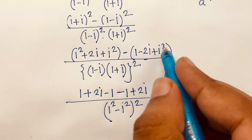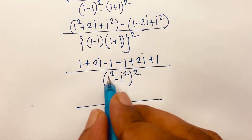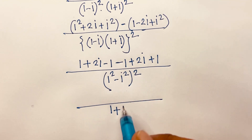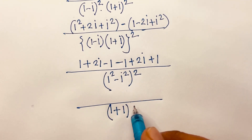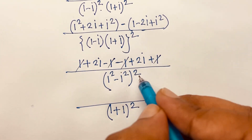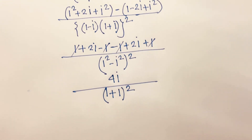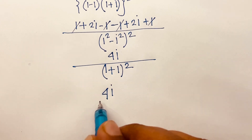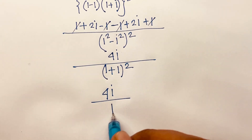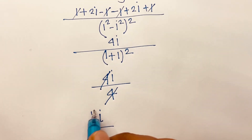Since i² = -1, the denominator becomes (1 - (-1))² = (2)² = 4. The numerator simplifies: the 1s cancel, leaving 2i minus (-2i) = 4i. So the result is 4i over 4, and the 4s cancel, giving us i as our final answer.